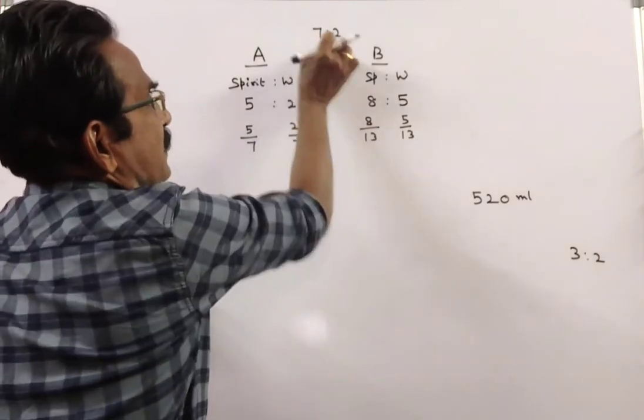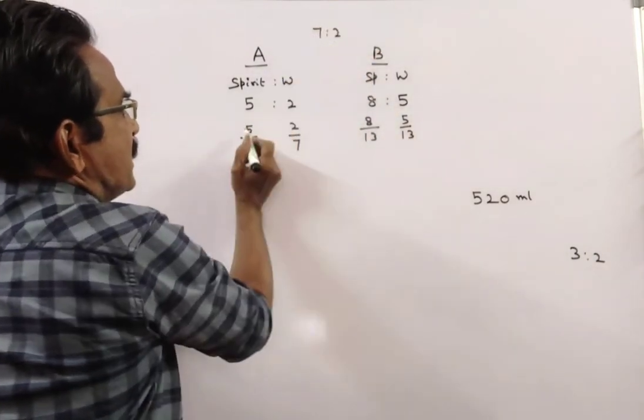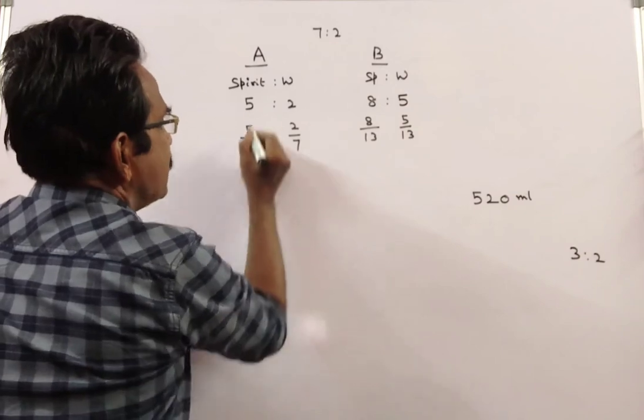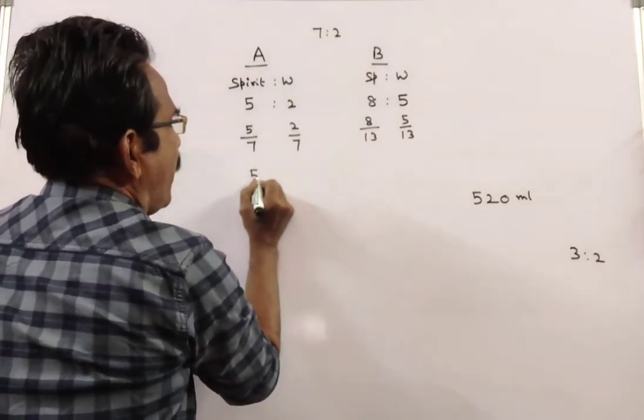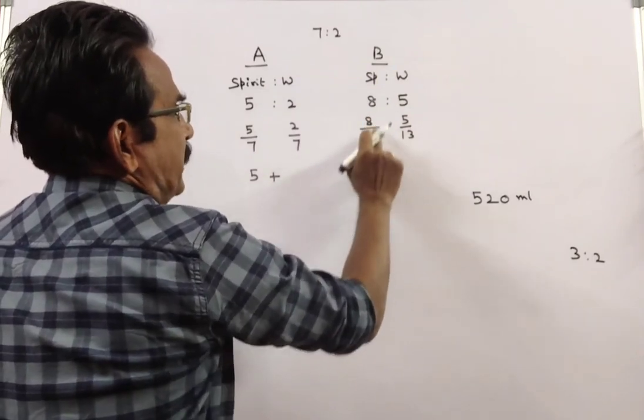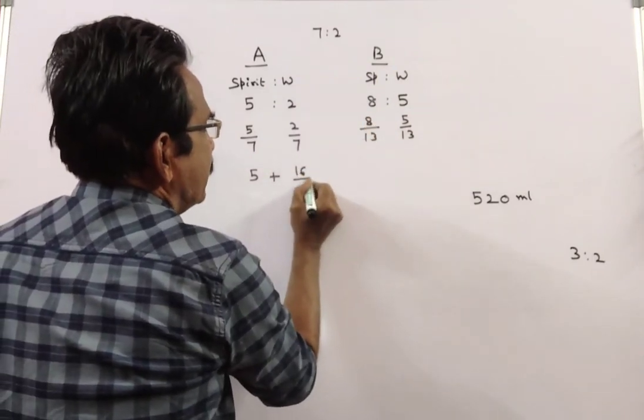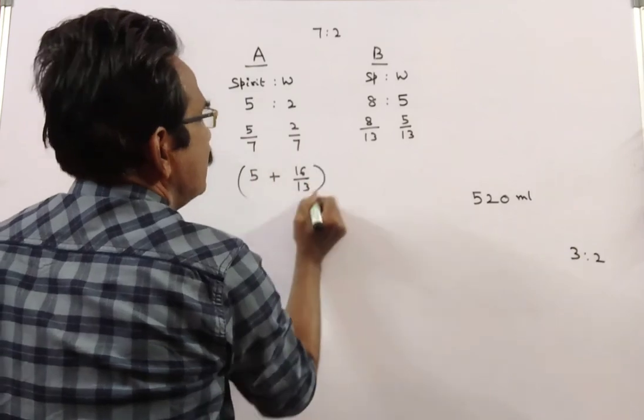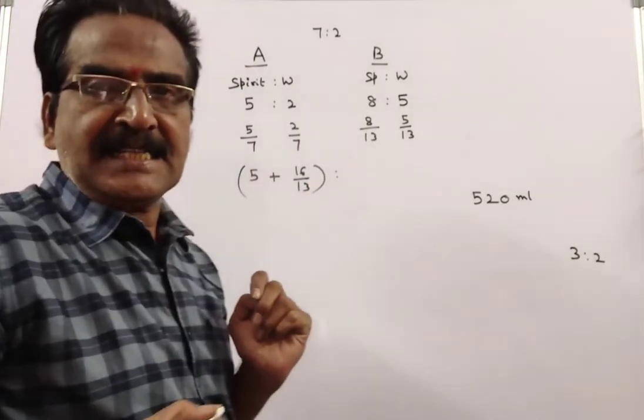This is taken 7 parts, this is taken 2 parts. 7 into 5 by 7 is 5, plus 2 into 8 by 13 is 16 by 13. This is spirit in the resultant solution.